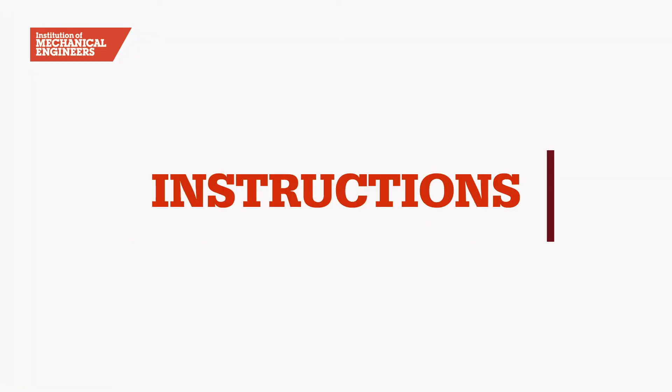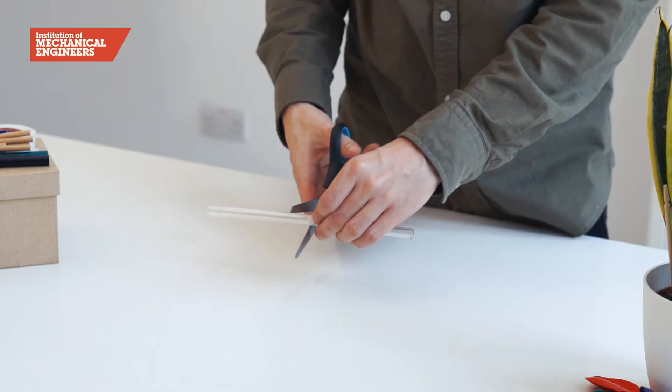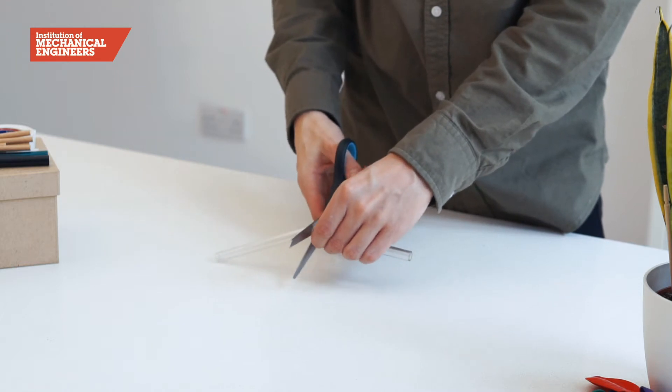Let's get started. First we will construct the part of the model that represents the lungs. Cut one of the drinking straws into two pieces.